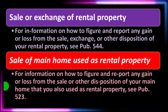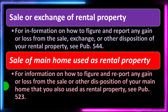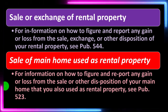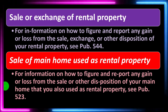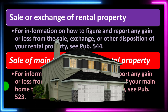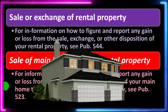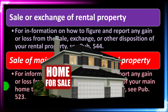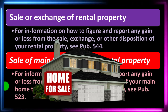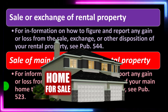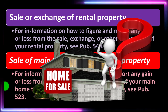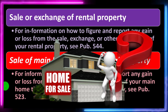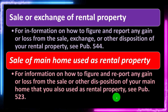For information on how to figure and report any gain or loss from the sale, exchange, or other disposition of your rental property, see Publication 544. Exchanging the rental property — such as a 1031 exchange — gets into a whole other realm of complications with regards to reporting gains and losses. If you had your own home and used part of it as rental property, that causes complications when you sell the home, because you may have depreciated part of the property. Part of the property was effectively used as rental rather than as a principal residence, raising questions about allocation and exemptions. See Publication 523 for more detail.